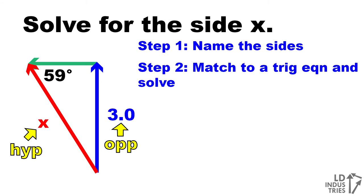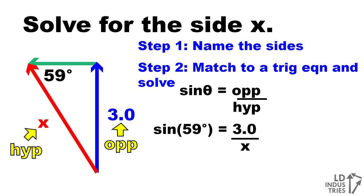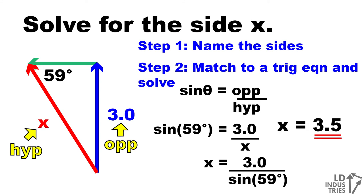So in step two, I need to find a trig equation that has both opposite and hypotenuse in it, which is the sine equation. I'm going to substitute in for the angle 59 degrees and make the opposite side 3.0. Then I can substitute in x for the hypotenuse. To rearrange this, I get that x is equal to 3 divided by sine of the angle. So that means the unknown side is 3.5 units long.